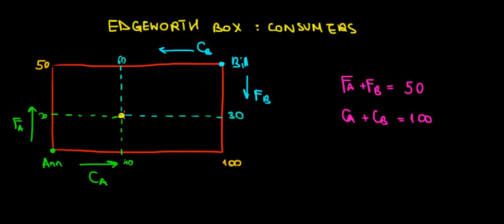So if you have a look at the yellow dot, we can see that Ann has 40 units of clothing here and 20 units of food. And at the same time, at the yellow dot, Bill has 30 units of food and 60 units of clothing.